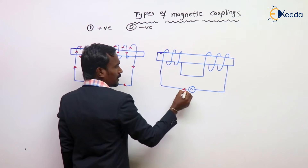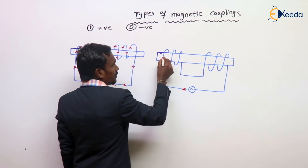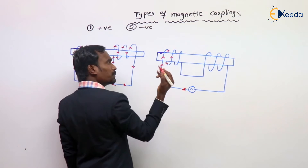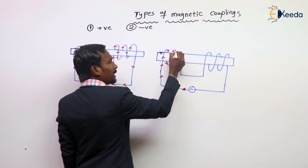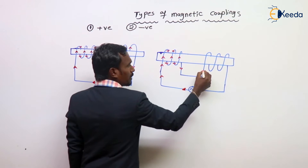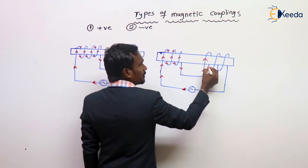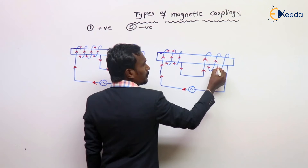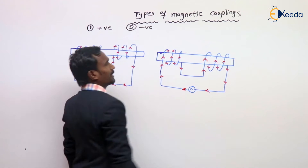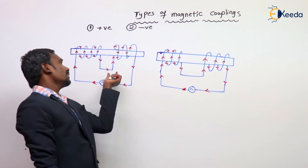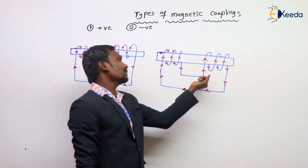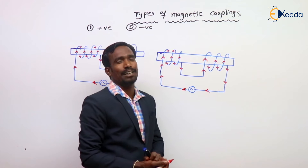See here the current direction: up direction and inside down direction and up direction, upside and up direction again, here down direction, here up direction and down, up direction, inside down, outside up, inside down, outside up and inside down like this. Tell me, is this a positive magnetic coupling or negative magnetic coupling?